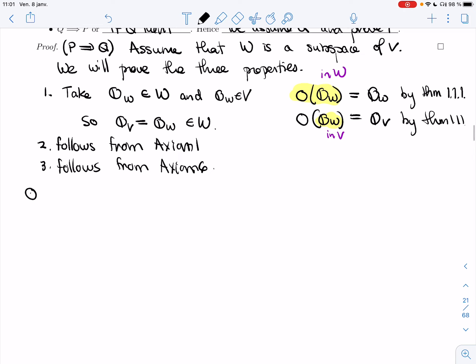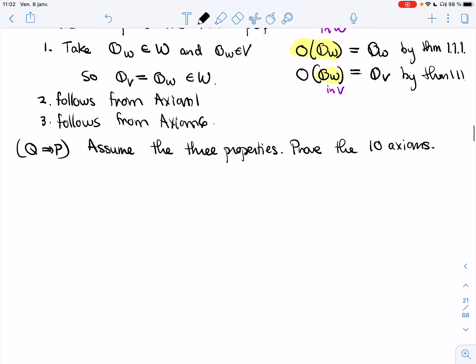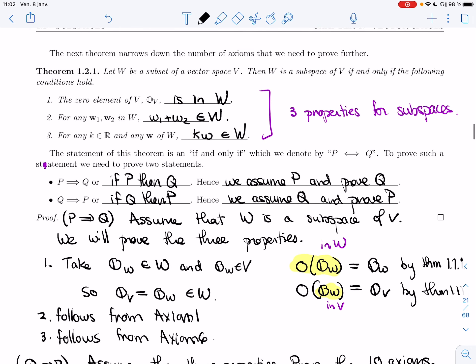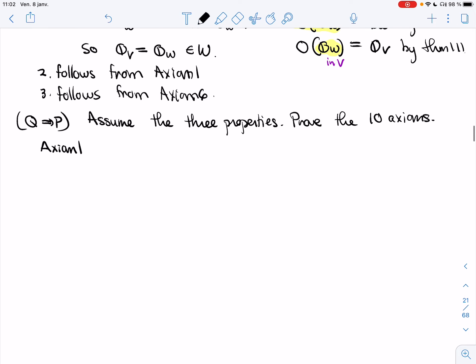So now we have to prove that Q implies P. So in this case, we're going to assume the three properties, and we need to prove that W is a subspace, so we need to prove the 10 axioms. So let's go in order. Axiom 1 is pretty much 2, it's exactly 2. So that follows from 2.